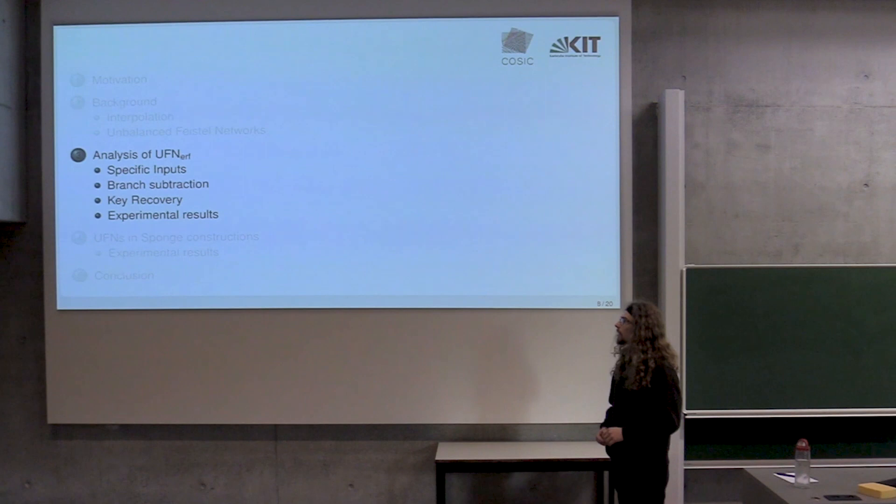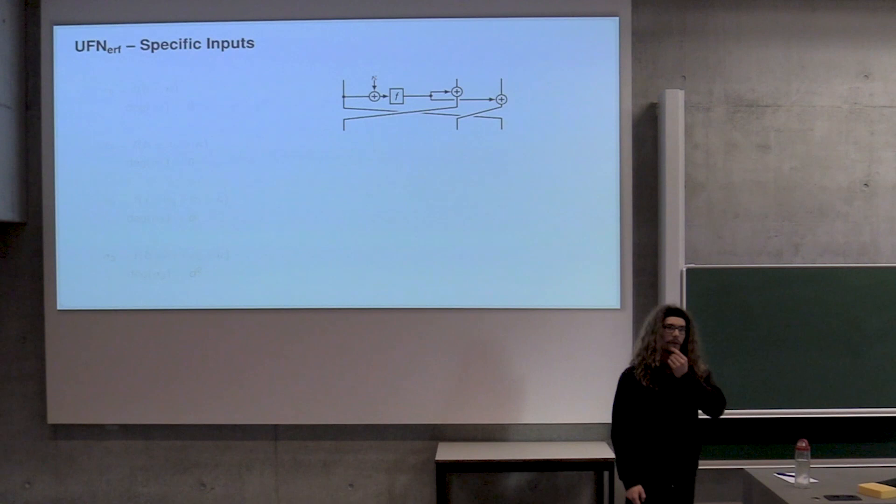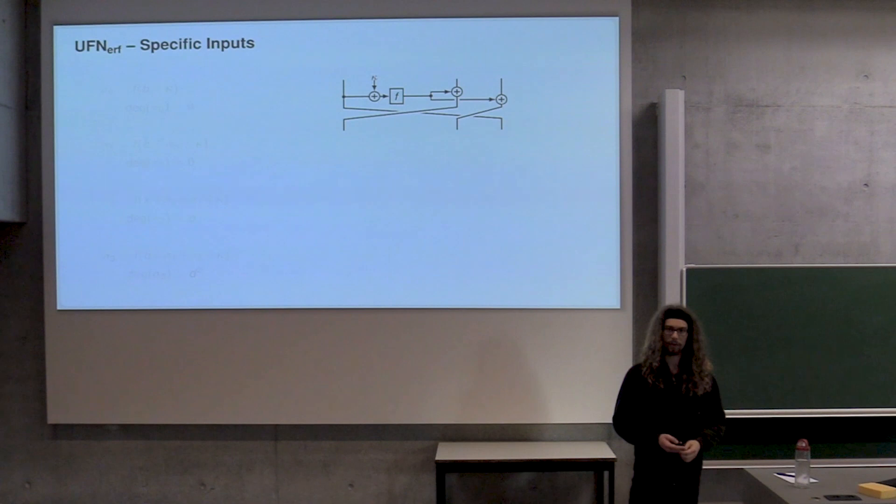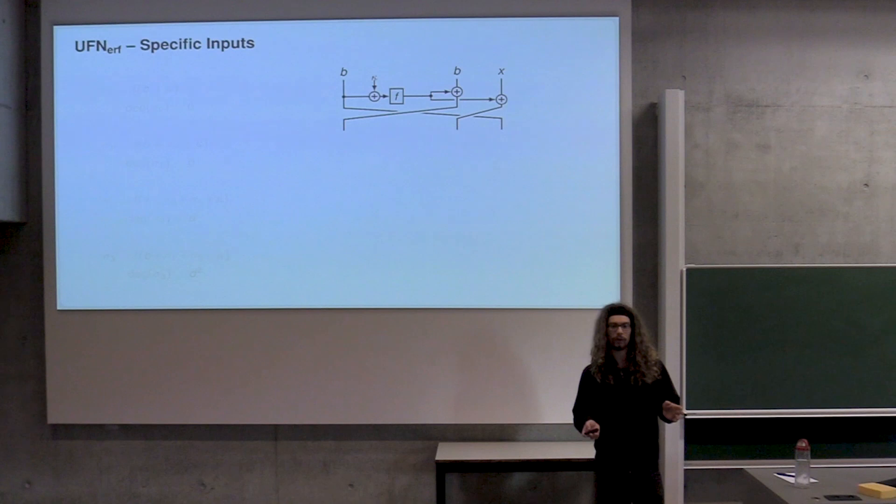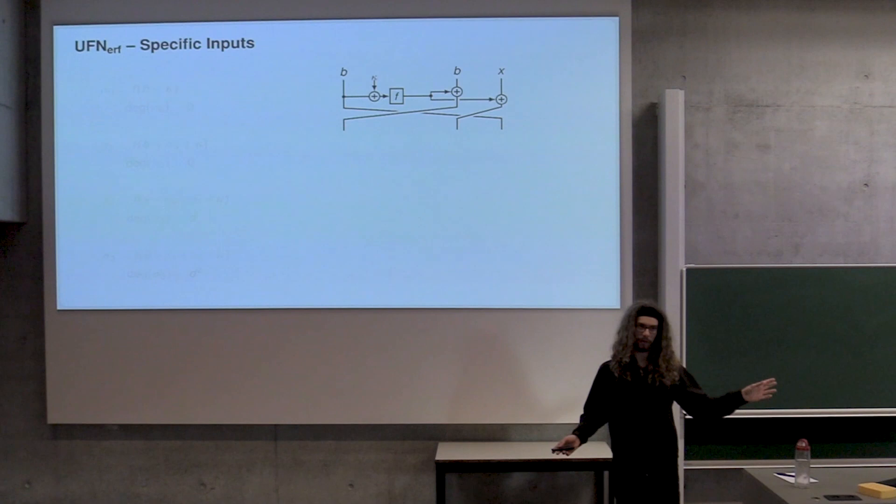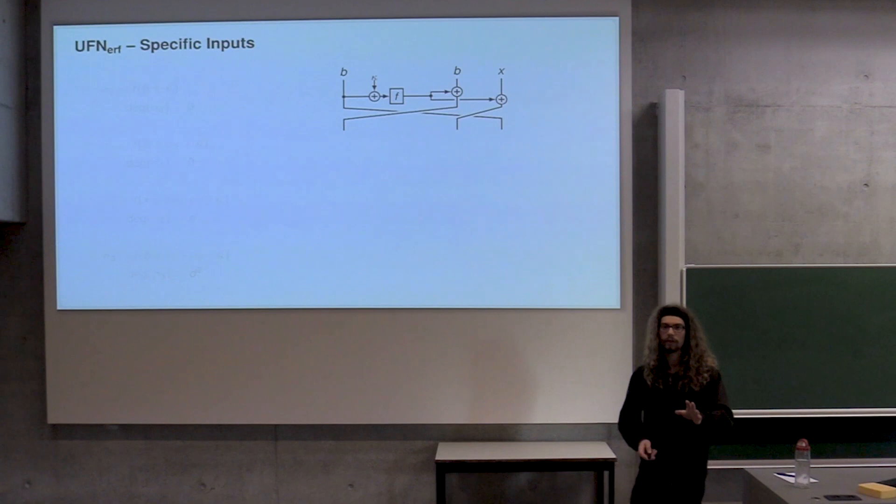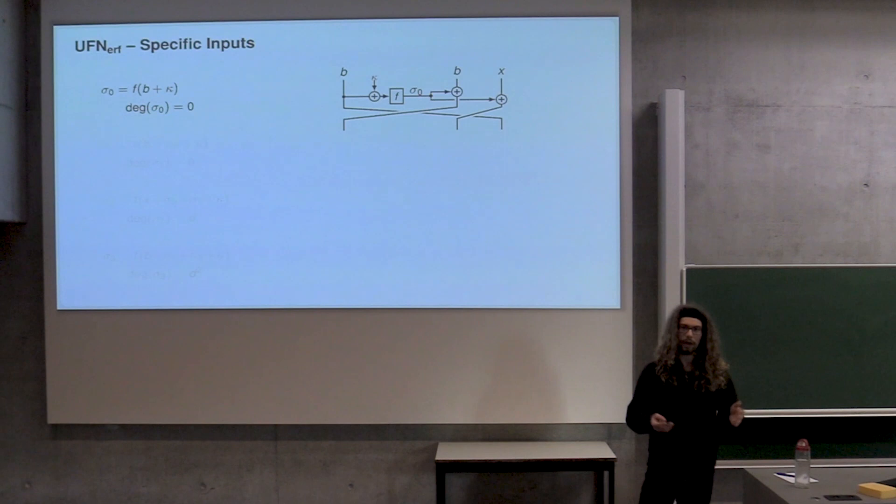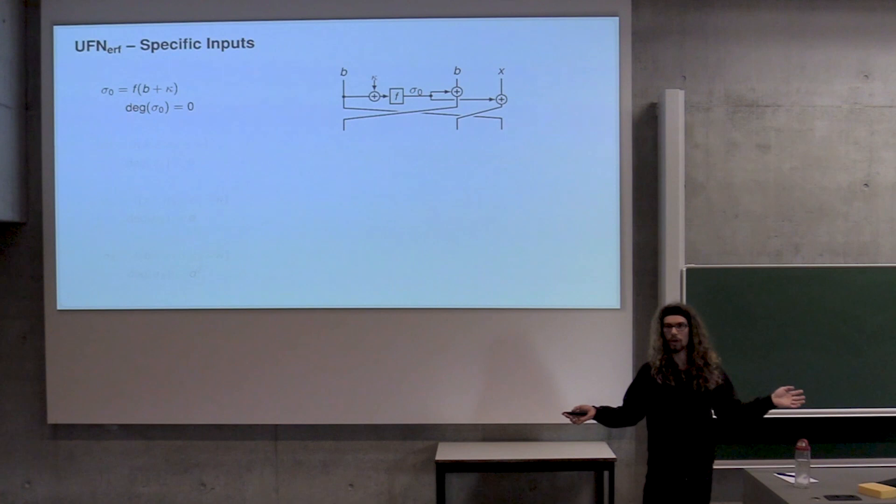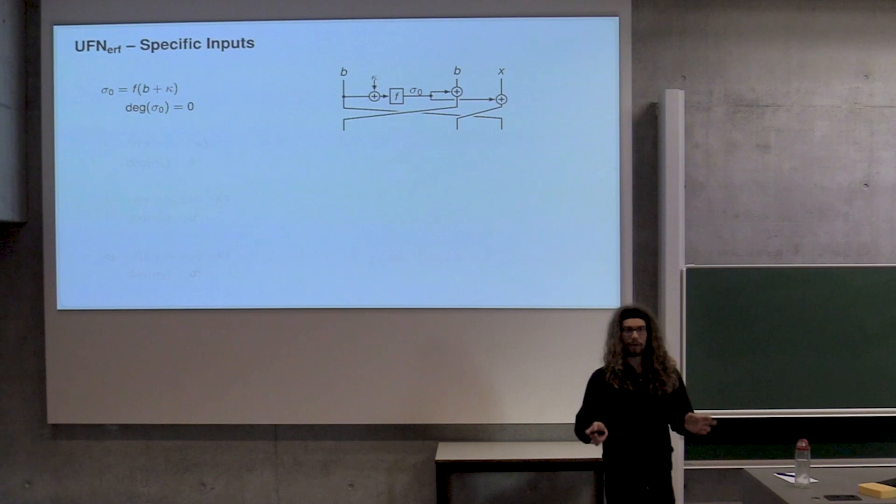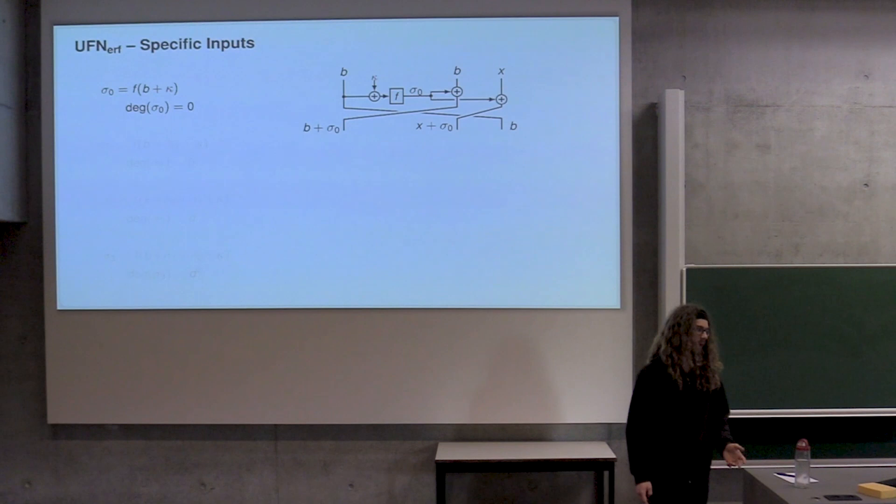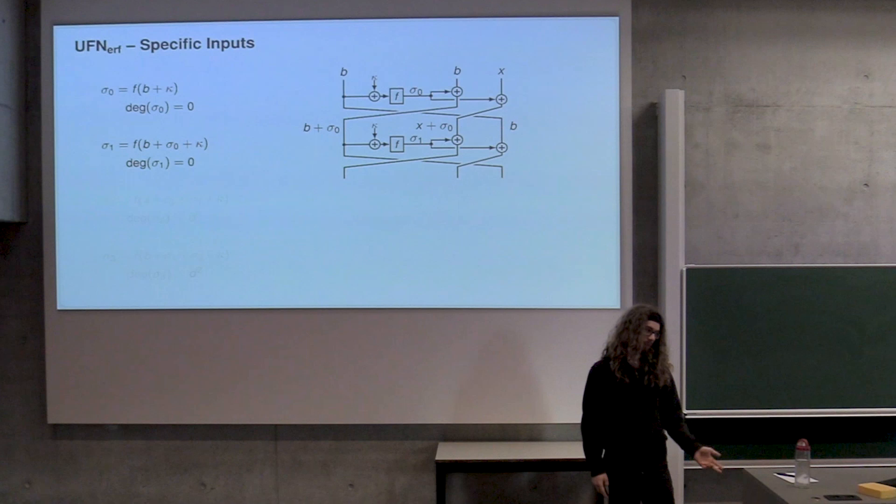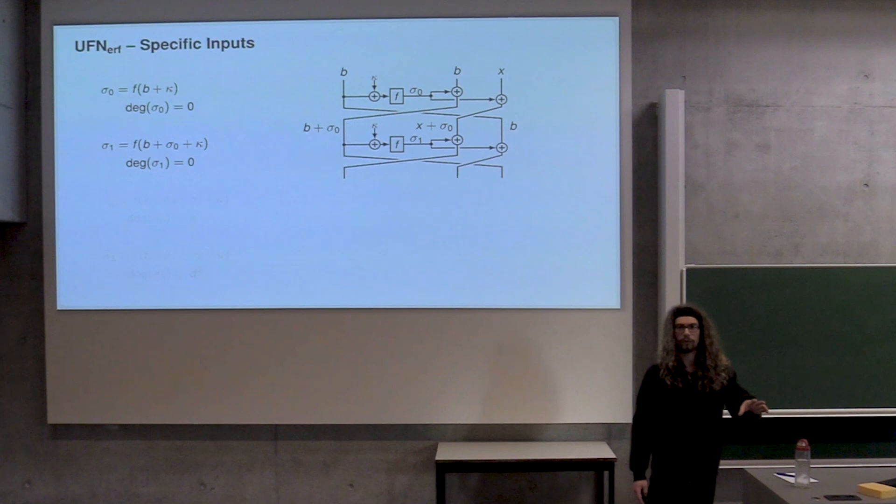Let's dive into the specific analysis. I'm going to explore a few rounds of a three branch unbalanced Feistel network here. We're going to use this sort of input: B is a constant that we just pick ourselves, and the rightmost branch is going to be our variable. Now let's see what happens when we start developing this. The first sigma that we get, sigma zero, is going to be the output of F on the inputs B and the key that we don't know. We don't know exactly what sigma zero is, but we know there's only constants in there. So the degree of sigma zero is zero.